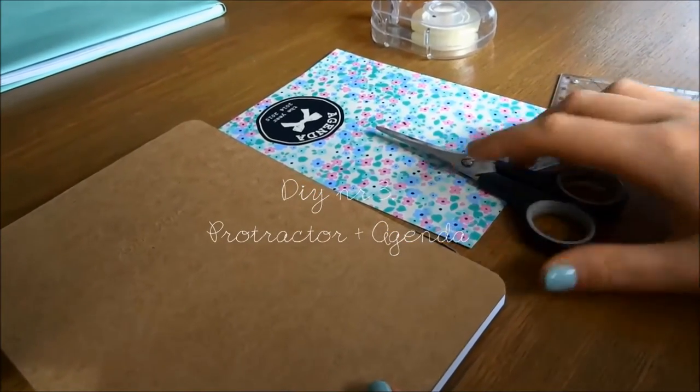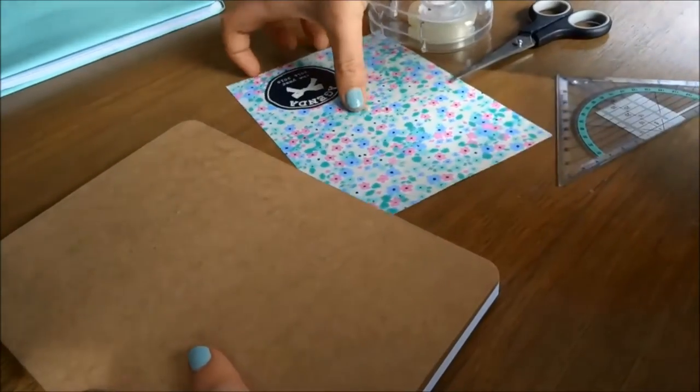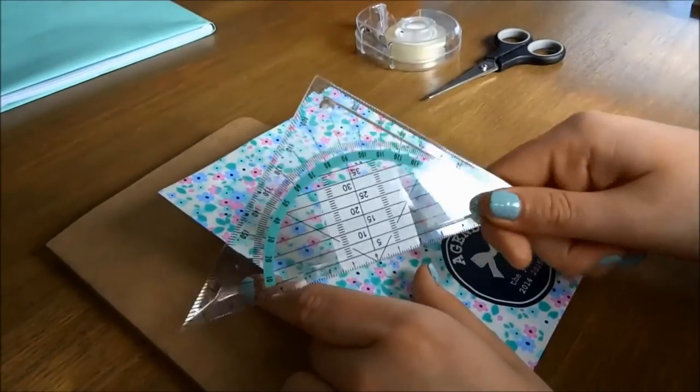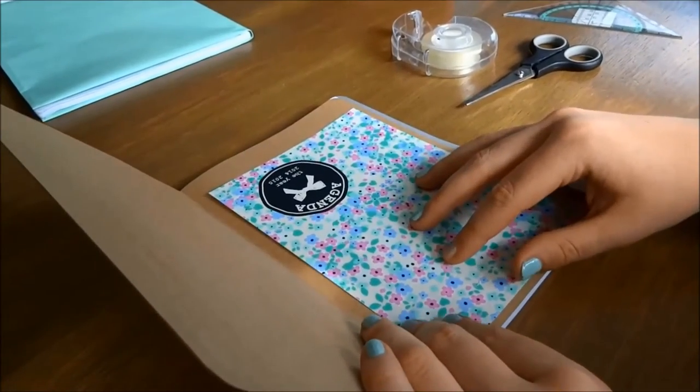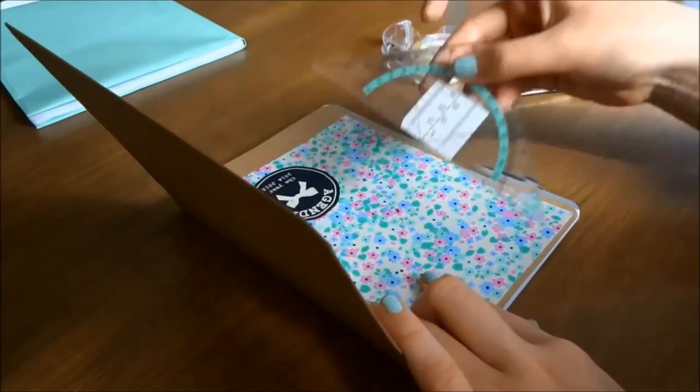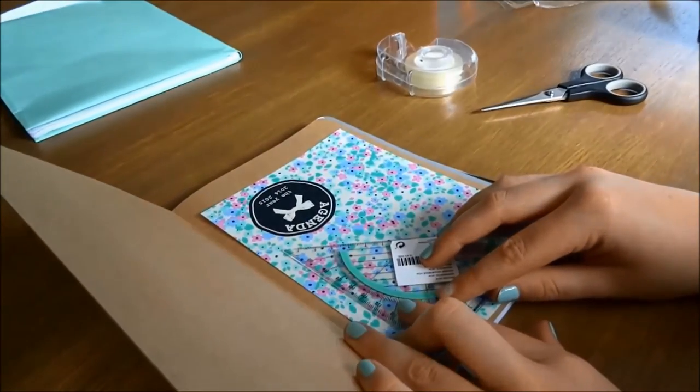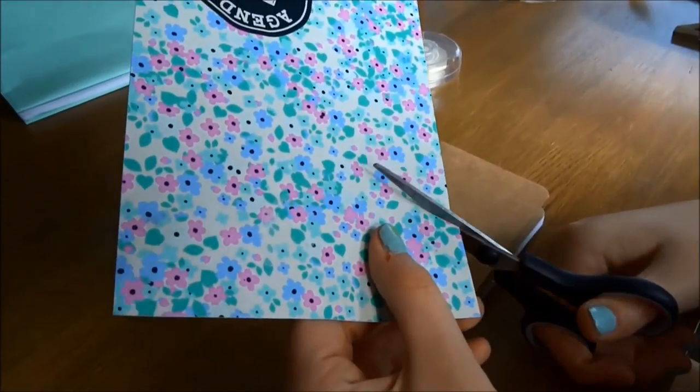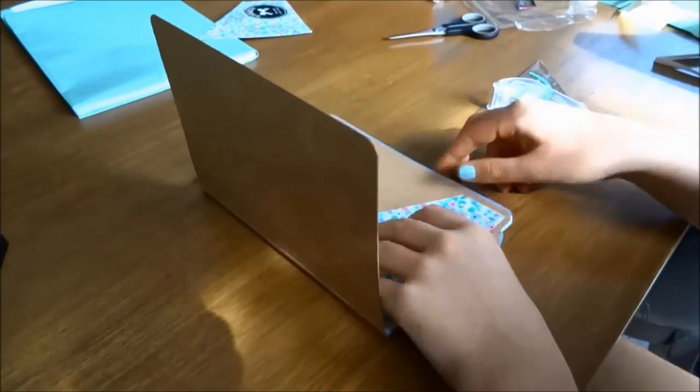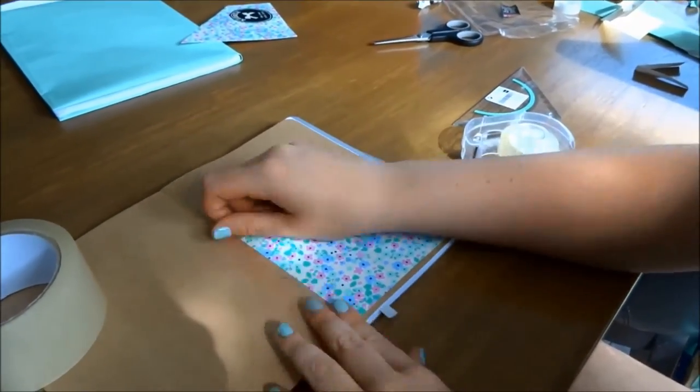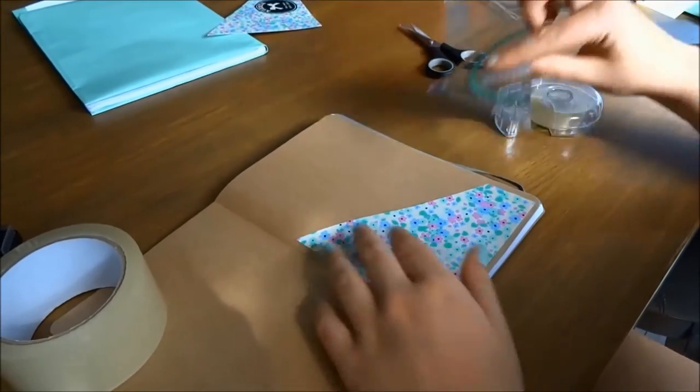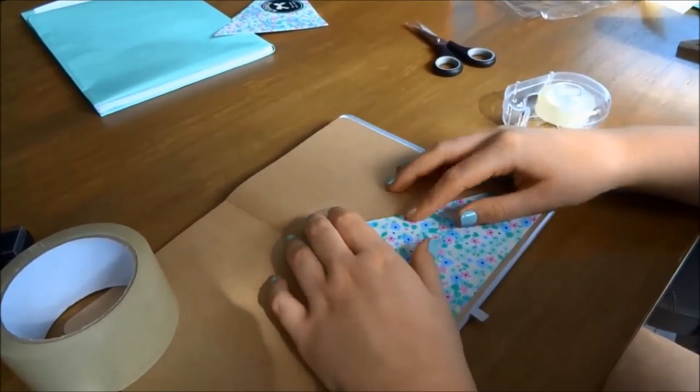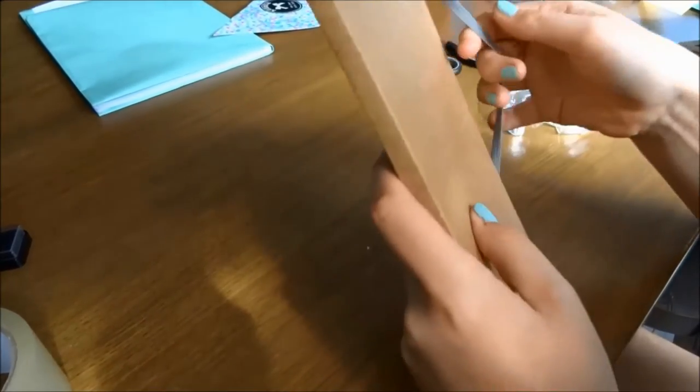The third DIY is a Protractor Agenda one. So I placed this piece of paper in the agenda. Maybe nice to know this was the front of the agenda I had last year. And I cut it in two halves. After that you need to make sure it will stay there. So I put some tape on it but you can also use glue, but I prefer the tape. And then it's done.